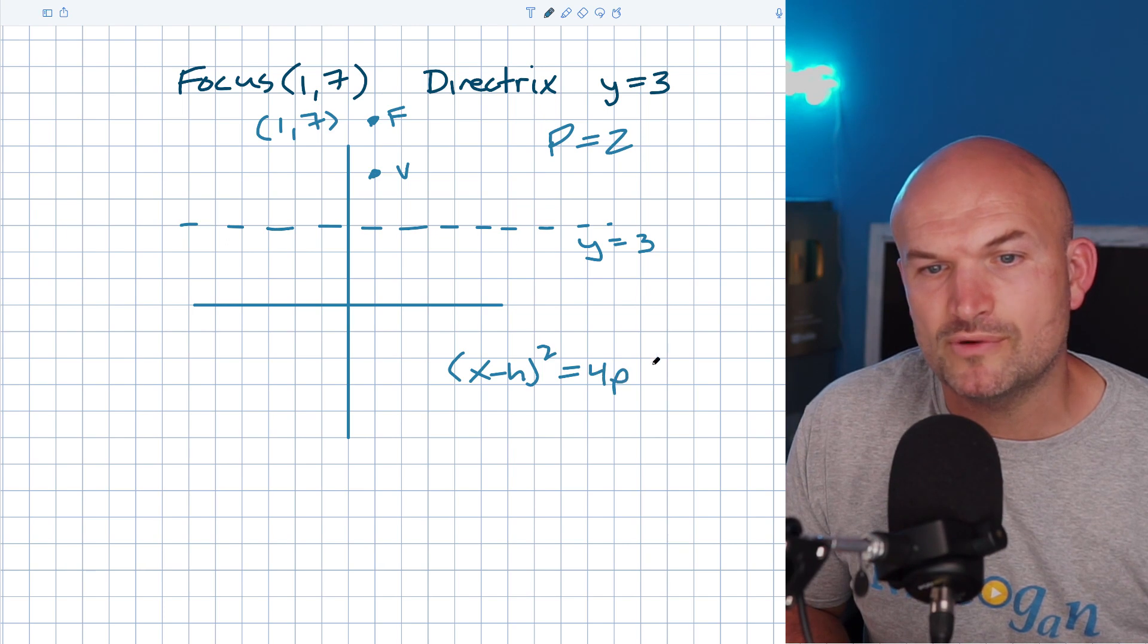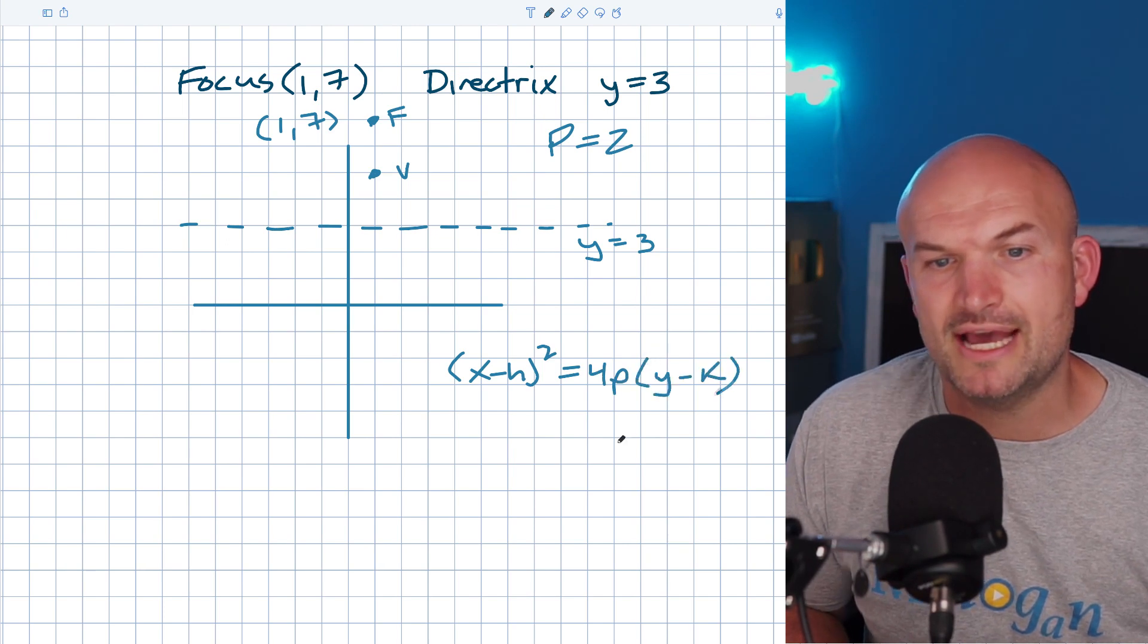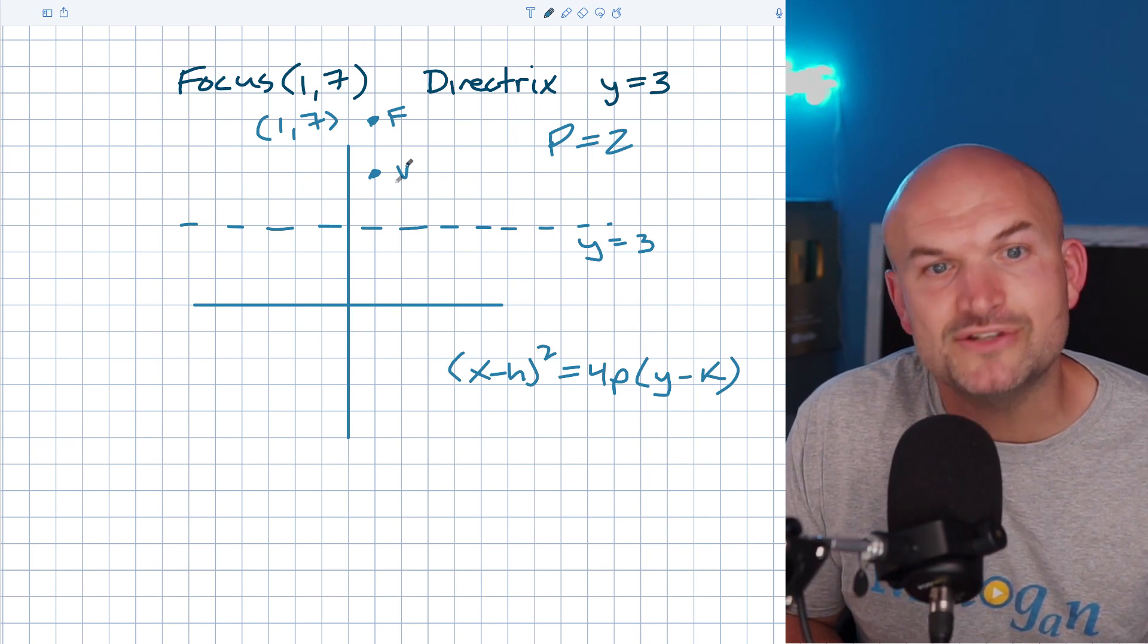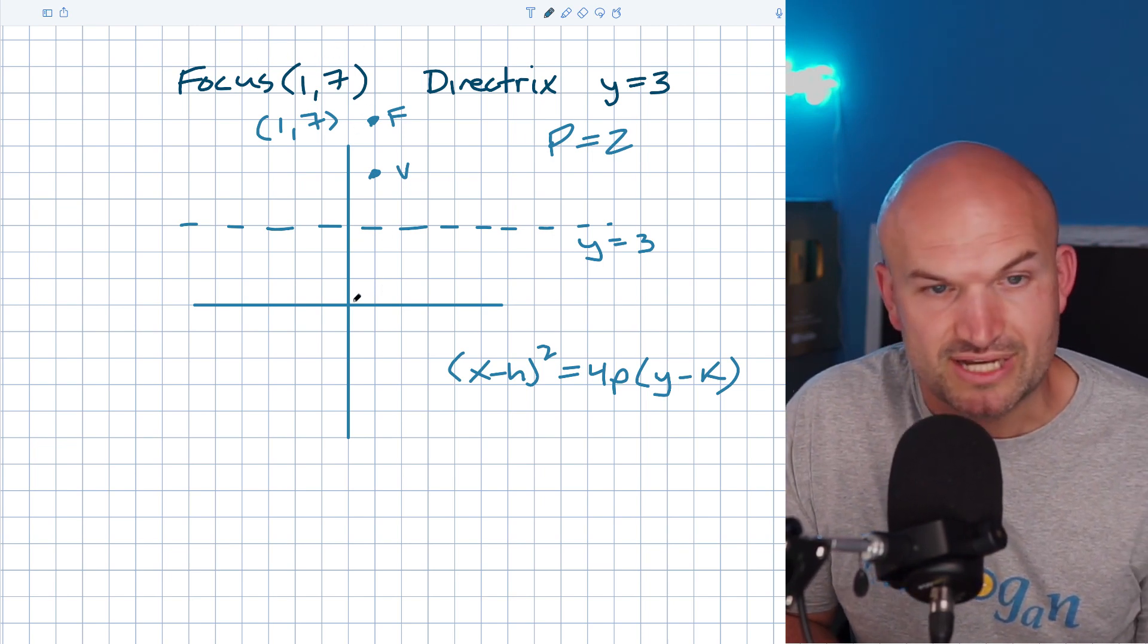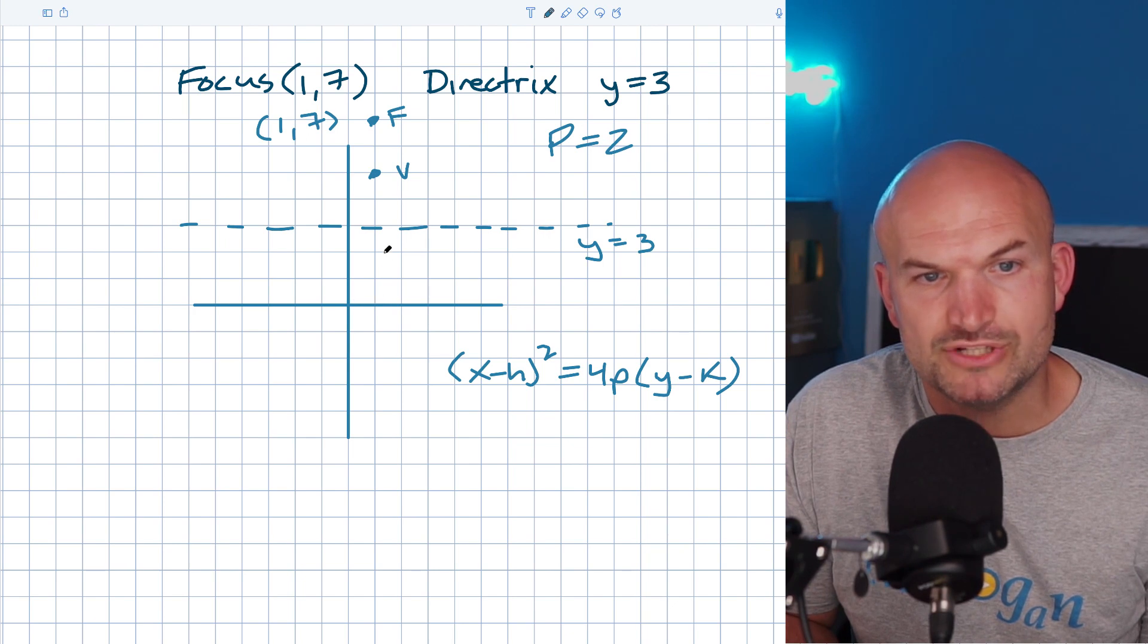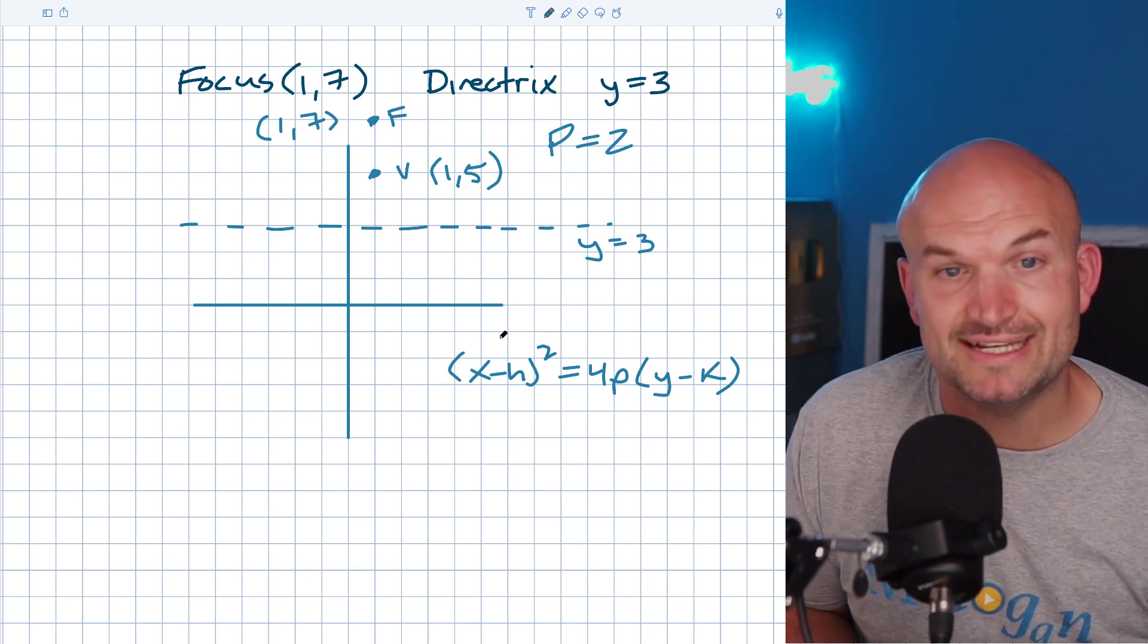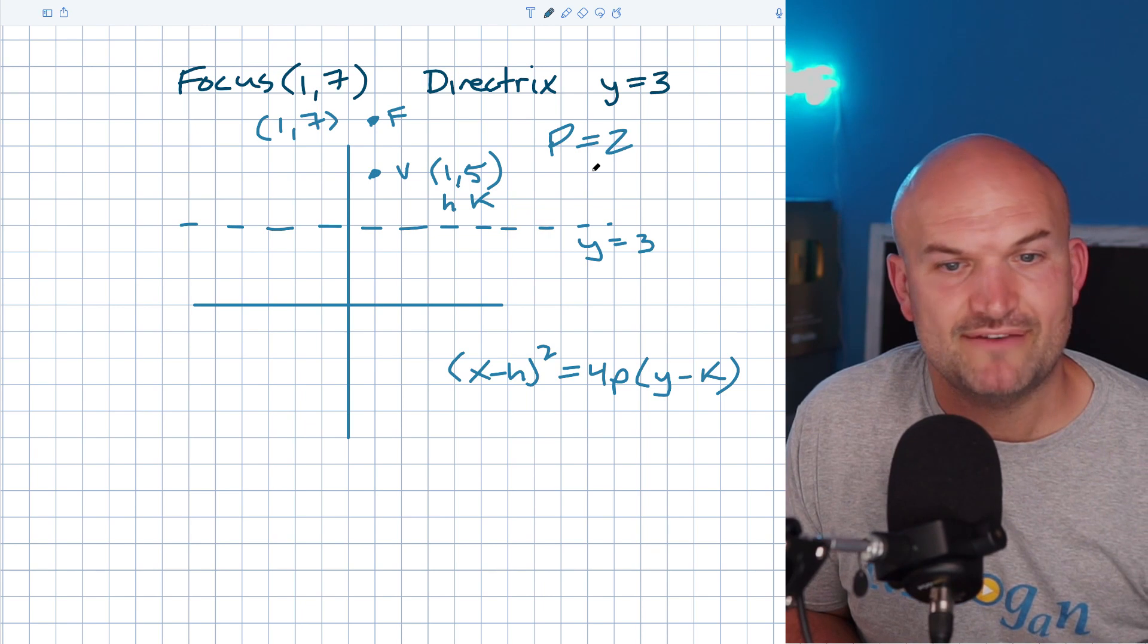Therefore, I'm going to have (x - h)² = 4p(y - k). We're not going to use the focus for h or k - we're going to use our vertex. What are the coordinates of the vertex? It's over one, up five, so it's (1,5). That is my h and that is my k.